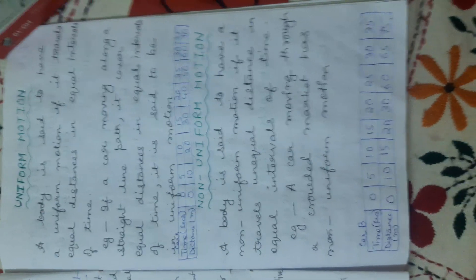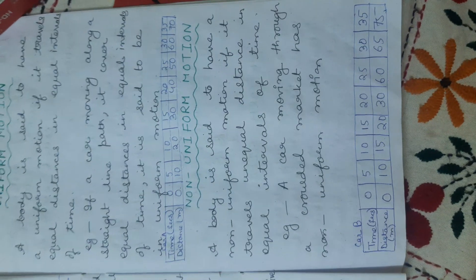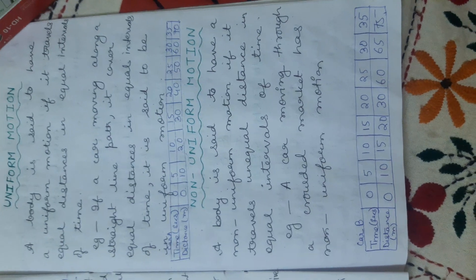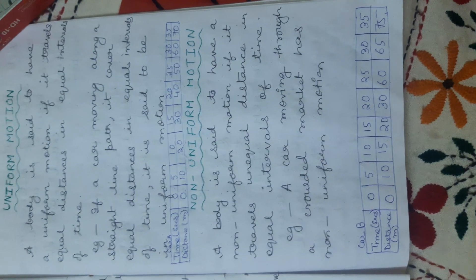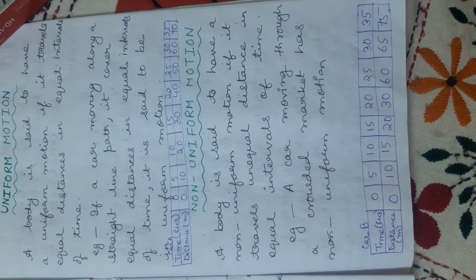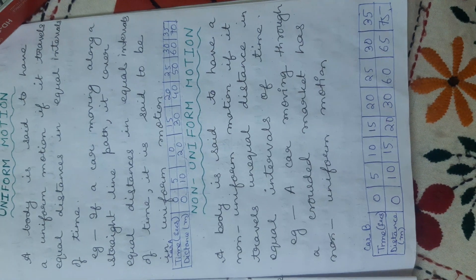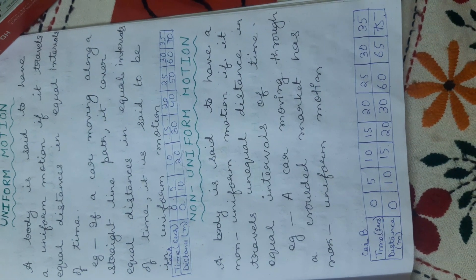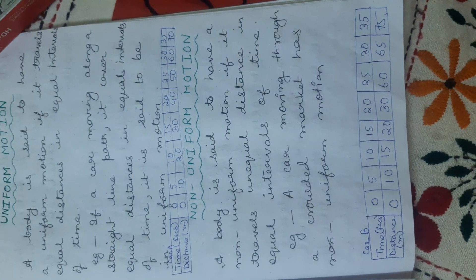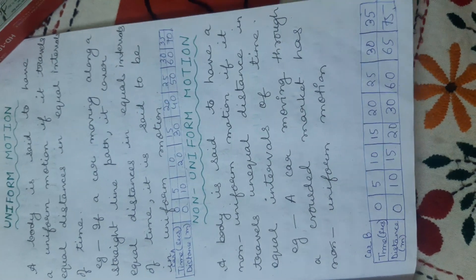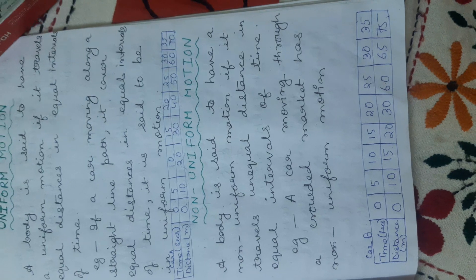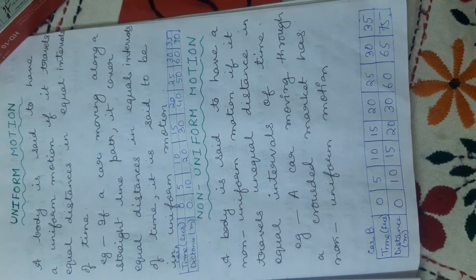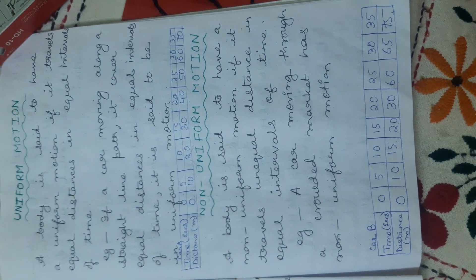What is non-uniform motion? Non-uniform motion is just the opposite of uniform motion — a body is said to have non-uniform motion if it travels unequal distances in equal intervals of time. For example, a car moving through a crowded market has non-uniform motion, because it cannot cover equal distance — it will cover unequal distances in equal intervals of time.